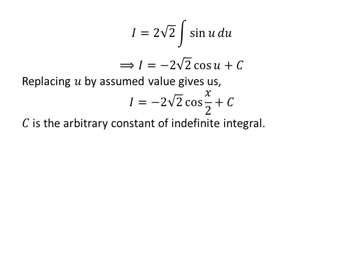We had assumed x over 2 equals u. So replacing u, we get the integration of square root of 1 minus cosine of x with respect to x equals minus 2 times square root of 2 times cosine of x over 2 plus capital C.